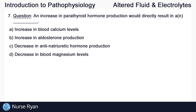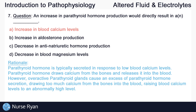Question number seven. An increase in parathyroid hormone production would result in an increase in blood calcium levels. Parathyroid hormone is typically secreted in response to low blood calcium levels and draws calcium from the bones, releasing it into the blood. However, overactive parathyroid glands cause an excess of parathyroid hormone secretion, drawing too much calcium from the bones into the blood and raising blood calcium levels to an abnormally high level.